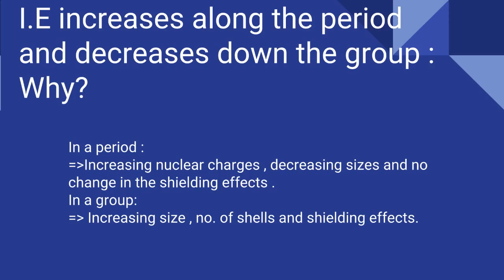Let's see the general trend of ionization energy in the periodic table. It increases along the period, that is from left to right, and decreases down the group, that is from top to bottom.